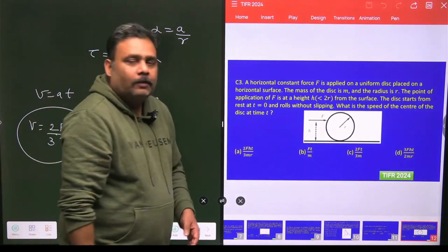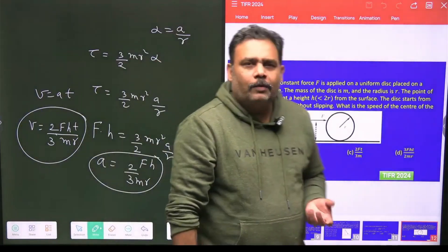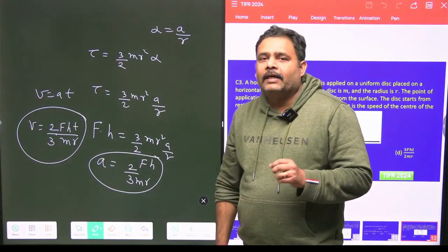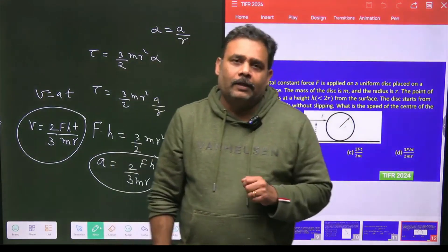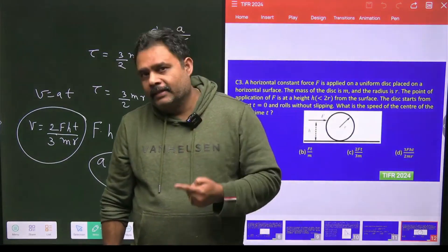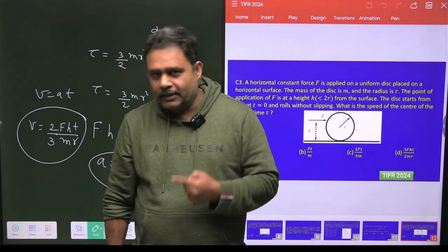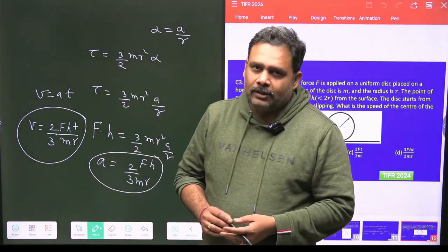So you can just go for option number one, which is your option. So it is a very interesting, very simple problem. Only one thing is there: What is the meaning of rolling without slipping? Once you are talking about rolling without slipping, the point of contact is at rest. This is the actual concept in this particular problem. And otherwise you can easily solve this type of problem.